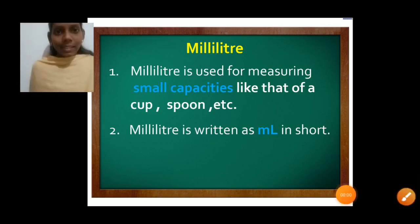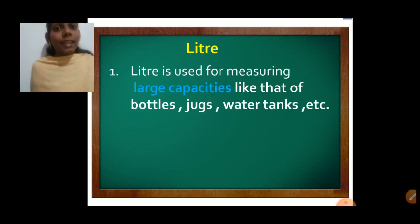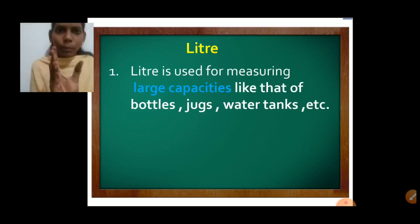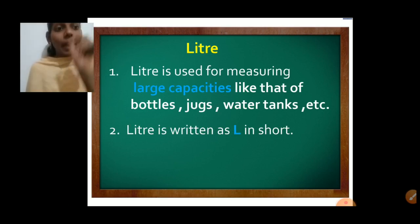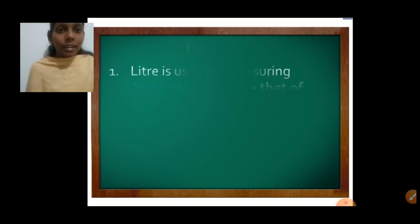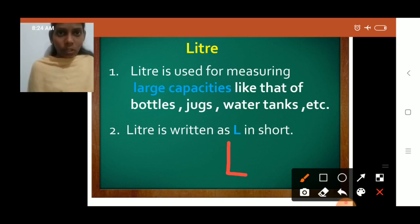Liter is the opposite of milliliter. Liter is used for measuring large capacities, like bottles, jugs, water tanks, and so on. Milliliter is used for measuring small capacities like cups and spoons. Liter is written as capital L in short, and it is used for measuring large capacities like water bottles, jugs, and water tanks.